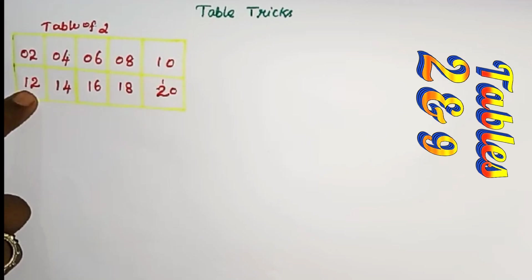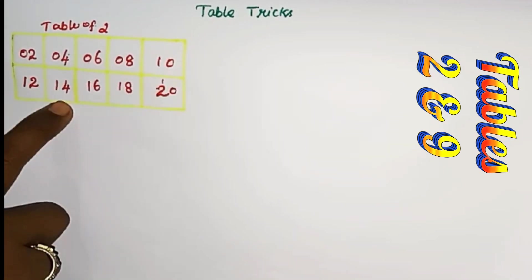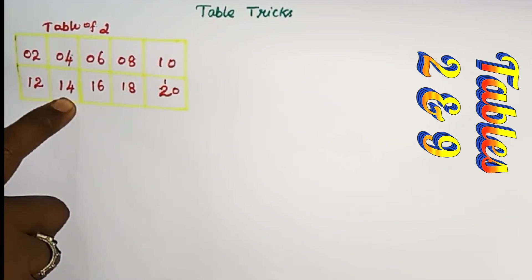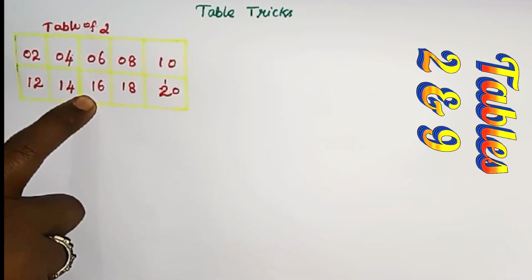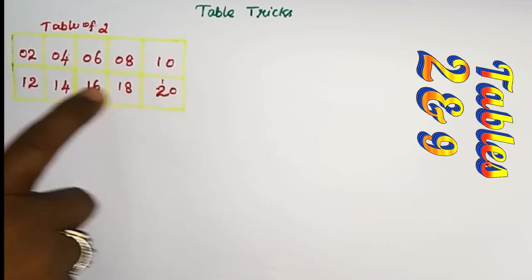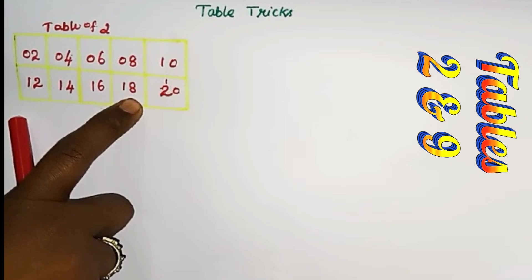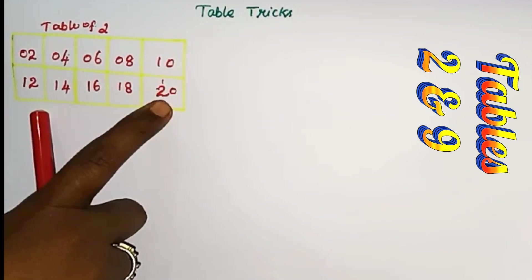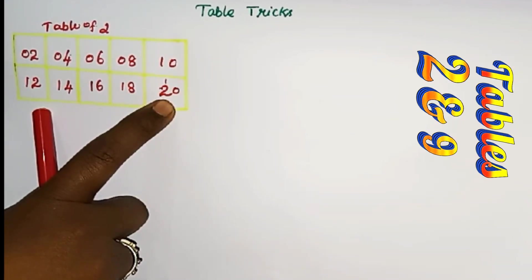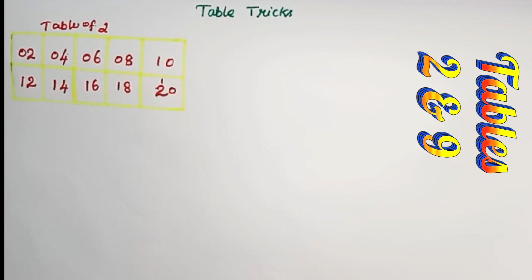2 6's are 12. 2 7's are 14. 2 8's are 16. 2 9's are 18. 2 10's are 20.